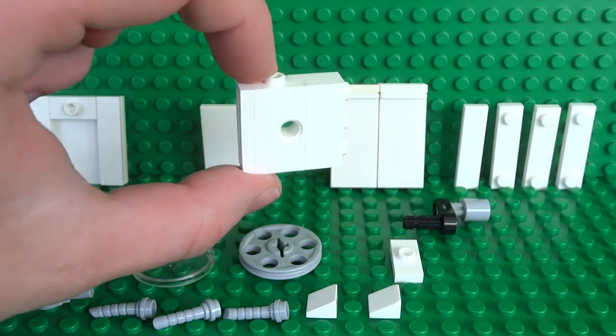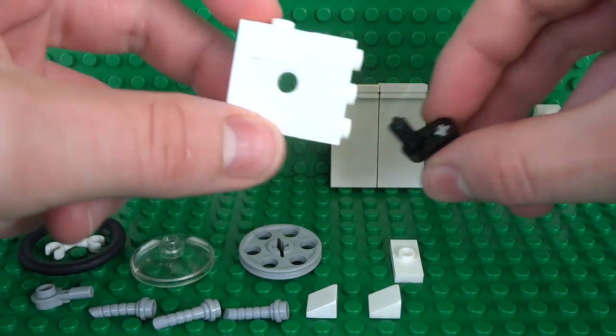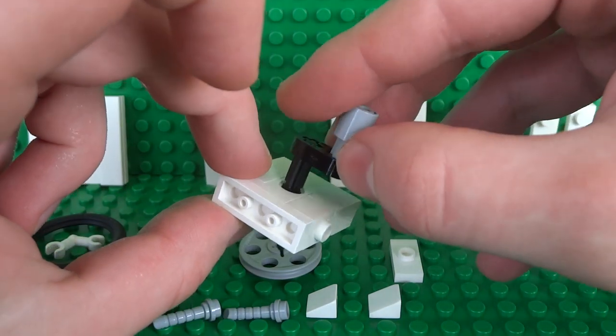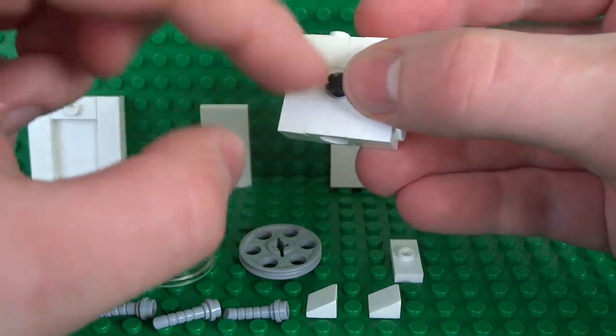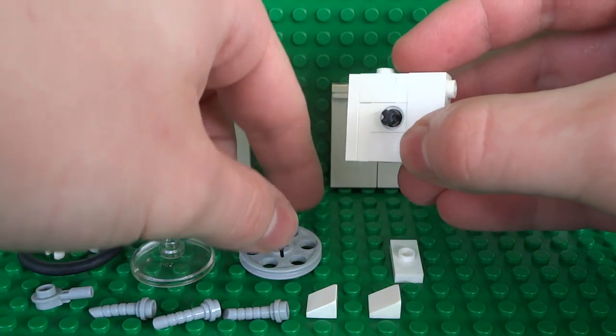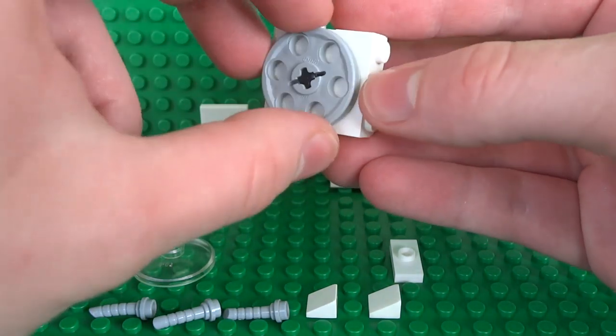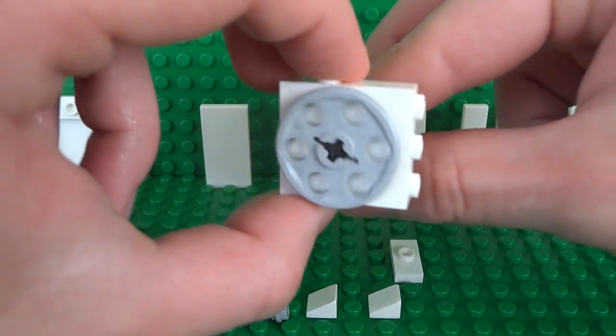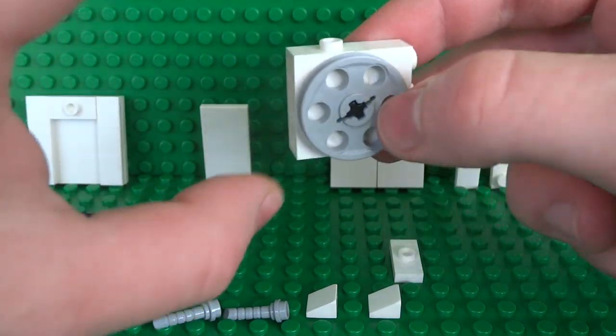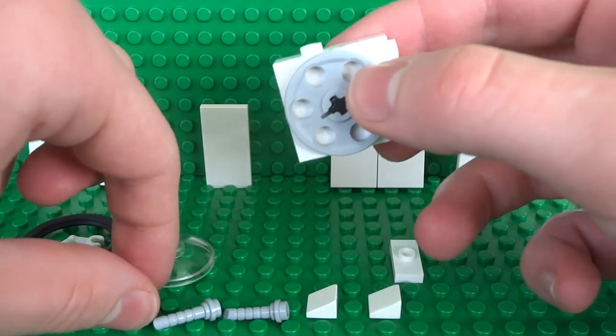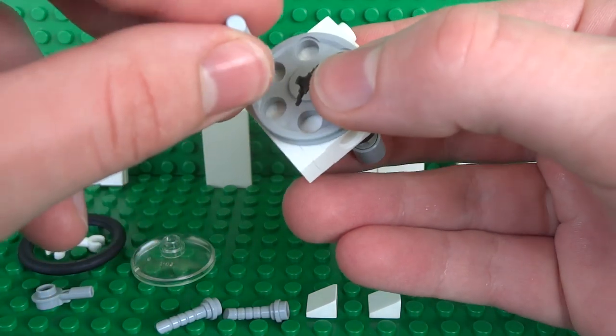Then this is where we can actually attach this handle that we built earlier. So that just goes through the back of the machine. Then on the front of the handle this is where we can start building up the inside of the washing machine. The barrel which spins around. So it's not really a barrel on this mini Lego version. But it still functions in the same way.